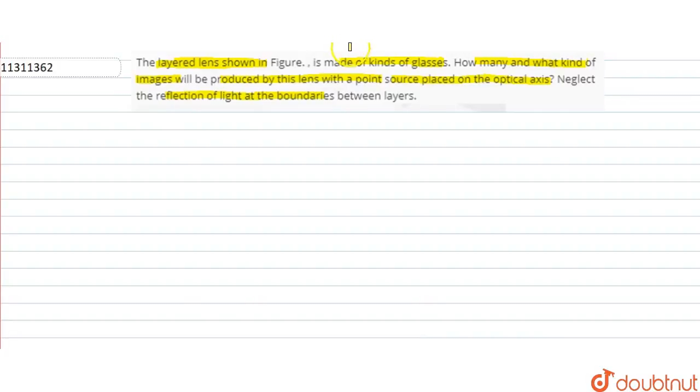We know that in this question, we have two figures. This figure has two glasses. We know what kind of image becomes the same image.